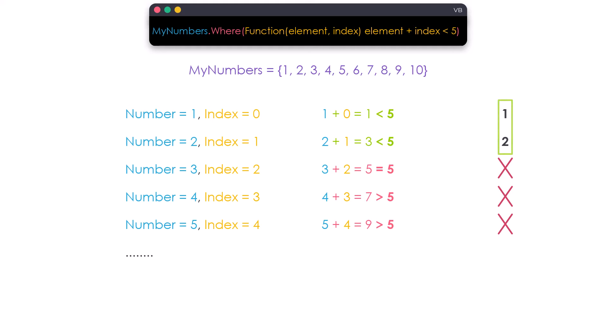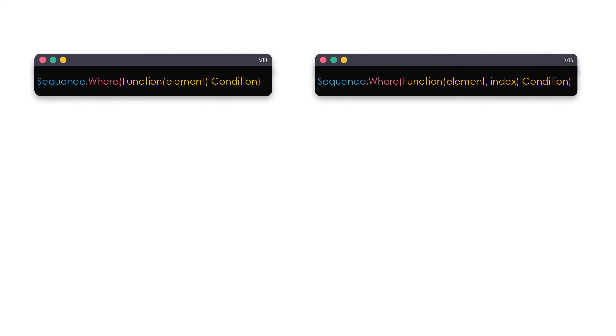This is how to use the second overload of the WHERE method. In this example I used both variables to check the sum of the number and its index, but you can use both variables in other ways depending on what you need. Both overloads can be used in the same way for any data type. When using the WHERE method, keep in mind these two overloads. I used the parameter names 'element' and 'index', but you can use any name you want — just try to use meaningful names based on the data you have.